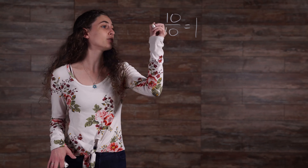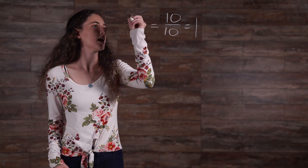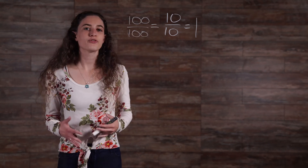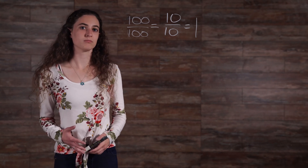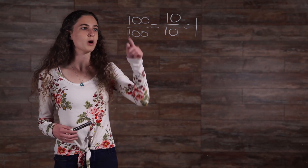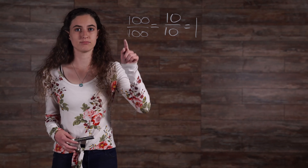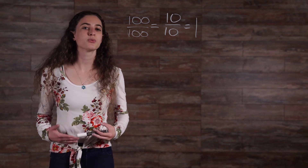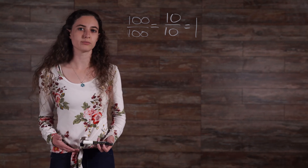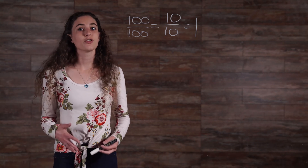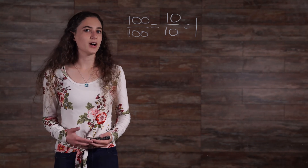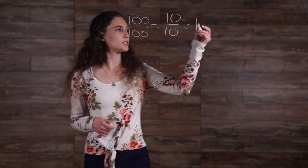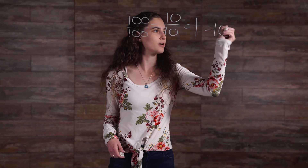10 over 10 can also be equivalently written as 100 over 100. The fraction bar can be said as 'per,' so this expression can be said as '100 per 100.' The word percent literally means per 100, so 100 per 100 means 100%. Therefore, when the same number is divided by itself, the result as a decimal is 1, and as a percent is 100.